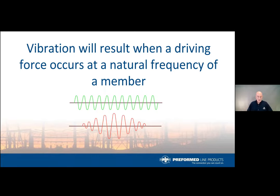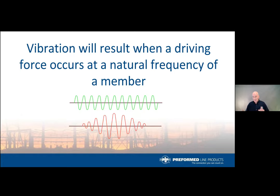Vibration is the movement of a member when acted upon by an outside force. Additionally, it needs to be at a natural frequency of that member. When this happens, there is little resistance in that member — or in this case, a conductor — for motion.